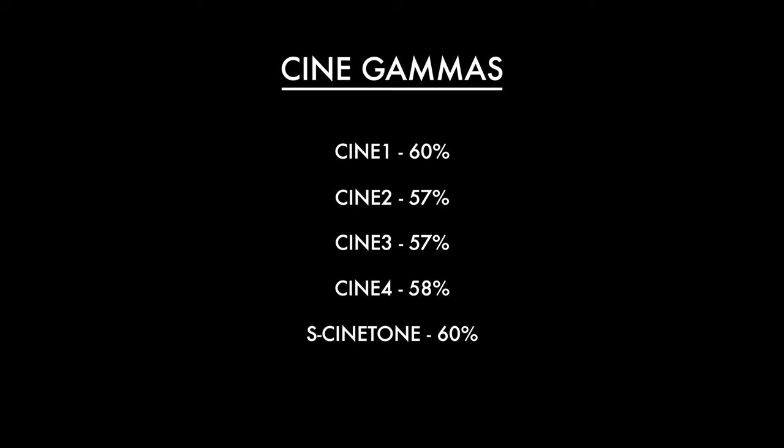For darker skin tones it's tricky to give a precise answer given the sheer range, but I'd say from my percentages down to potentially 45% for the Cine gammas — really the best answer is to do some test clips yourself; I can only use myself as subject. Just to touch on hot spots: you'll get particularly bright areas on a subject's face due to natural oils, which are reflective. The way I've set my zebras is to find an average exposure percentage for the key side of the face. You can set zebras to protect from hot spots, but bear in mind this can lead to a much darker exposure overall — which is when the makeup artists scream.